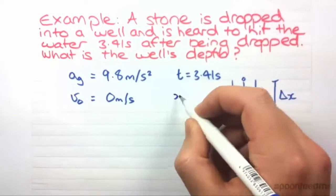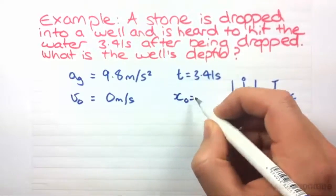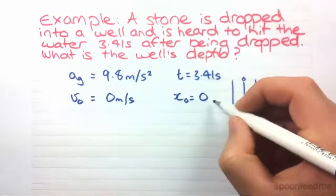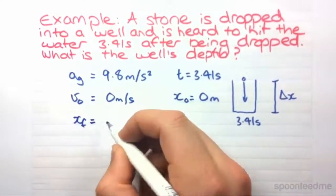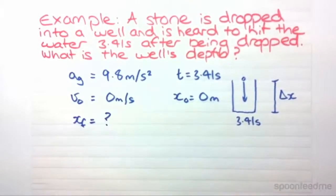It's 0 meters per second. x₀ we'll define as 0. We'll define the top of the well as 0. And xf is what we need to find.